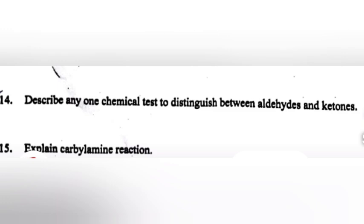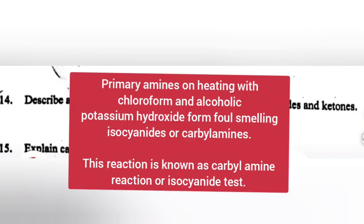Question 15: Explain carbylamine reaction. Answer: Primary amines on heating with chloroform and alcoholic potassium hydroxide form foul-smelling isocyanide or carbylamines. This reaction is known as carbylamine reaction or isocyanide test.